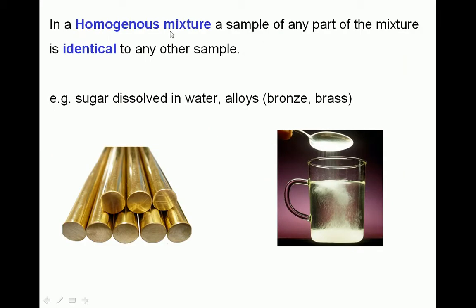In a homogeneous mixture, a sample of any part of the mixture is identical to any other sample, and there is only one phase present. Common examples are alloys — things such as bronze and brass, which are homogeneous mixtures of different metals. Another example is a solution, where a substance is dissolved in a solvent, such as sugar dissolved in water. If we stir the water, the sugar dissolves, and it doesn't matter whether we sample the top or the bottom — the composition will be the same.